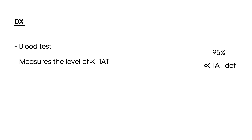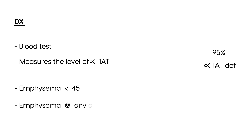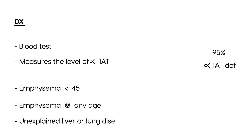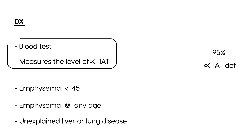Certain clues should prompt you to suspect this deficiency. The first is people who develop emphysema at a young age — less than 45 years old. Another red flag is people who develop emphysema but are non-smokers with no occupational exposure. Also, unexplained liver disease or cirrhosis is another indicator.